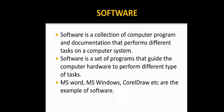Now, the next term is your software. What is software? Software is a collection of computer programs and documentation that perform different tasks on a computer system. Or you can consider it as a set of programs or set of instructions that guide the computer hardware how to perform a particular type of task. Some examples of software are MS Word, MS Windows, CorelDRAW, etc. These are some examples of software.